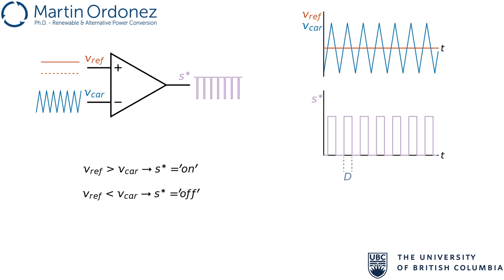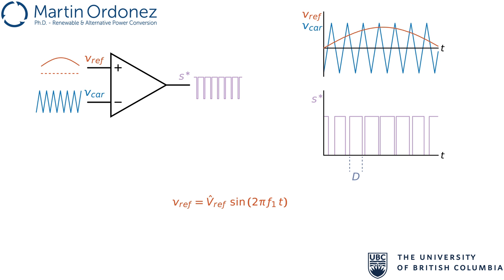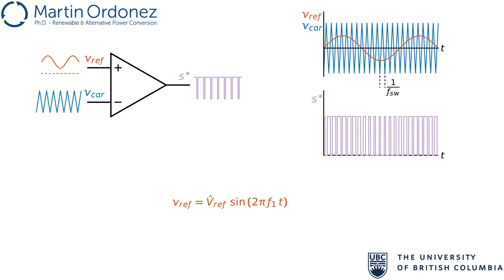Now, if we change VREF following the sine wave of frequency F1, for example, D will change with time following the sine wave. The switching frequency is the frequency of VCAR. The ratio between F1 and F-switch is called the frequency modulation index, MF. MF indicates how many periods of VCAR are contained in a period of VREF. The higher this number, the easier it is to filter the harmonics. The ratio between the peak of the reference and the peak of the carrier is called amplitude modulation index, MA.